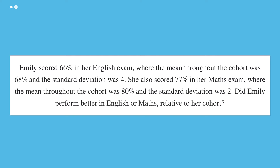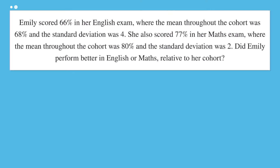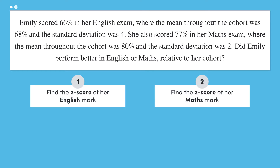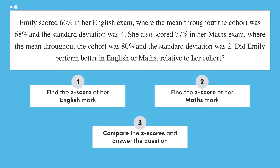So let's try out a practice question. Emily scored 66% in her English exam, where the mean throughout the cohort was 68% and the standard deviation was 4. She also scored 77% in her maths exam, where the mean throughout the cohort was 80% and the standard deviation was 2. Did Emily perform better in English or maths relative to her cohort? It wouldn't be fair to just compare the raw marks, so we need to find the standardised Z-scores for her marks in each subject, then compare them to arrive at a conclusion about Emily's relative performance.